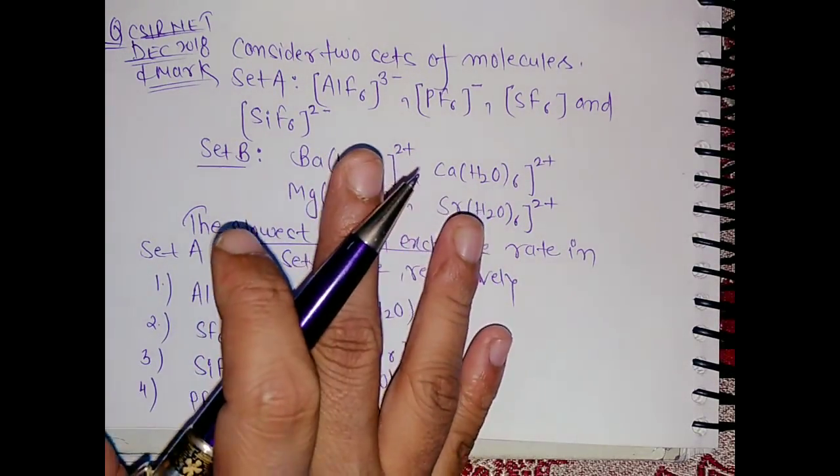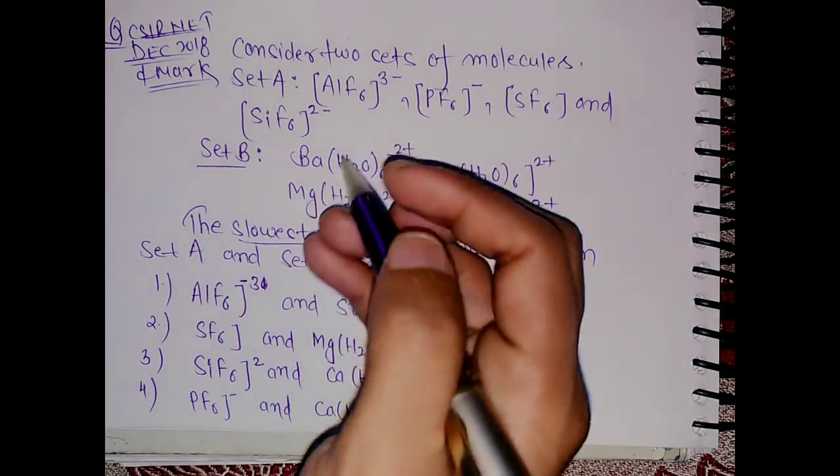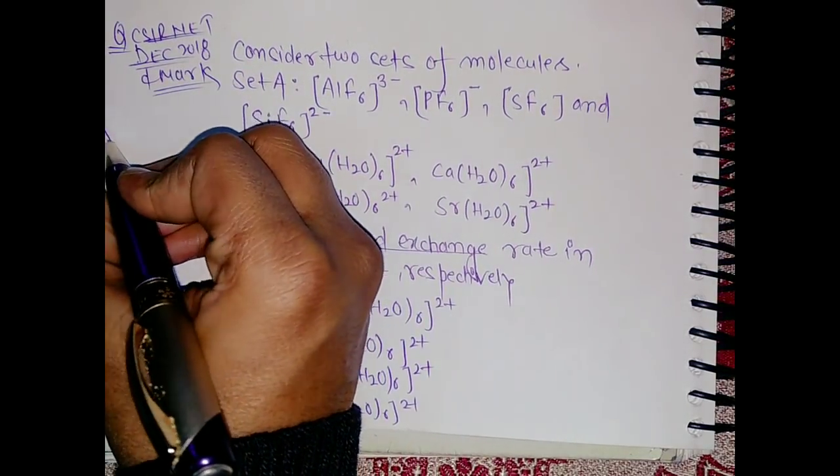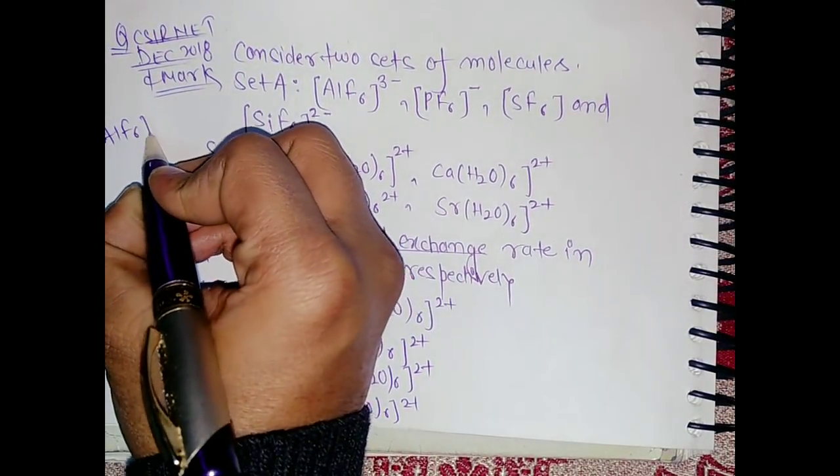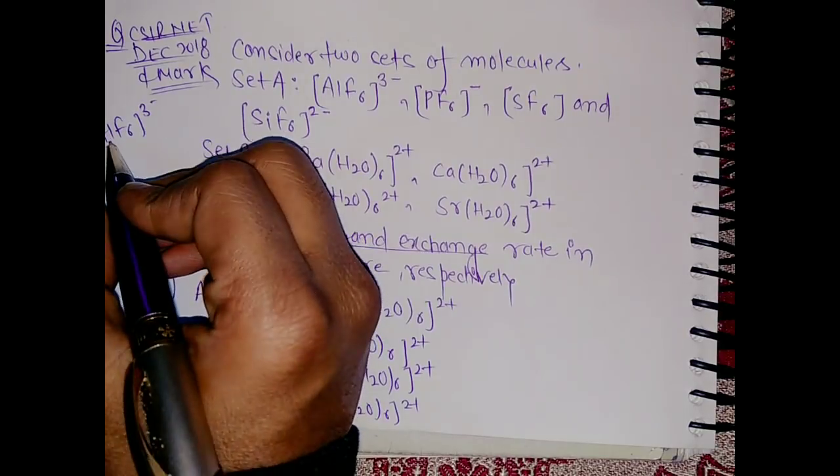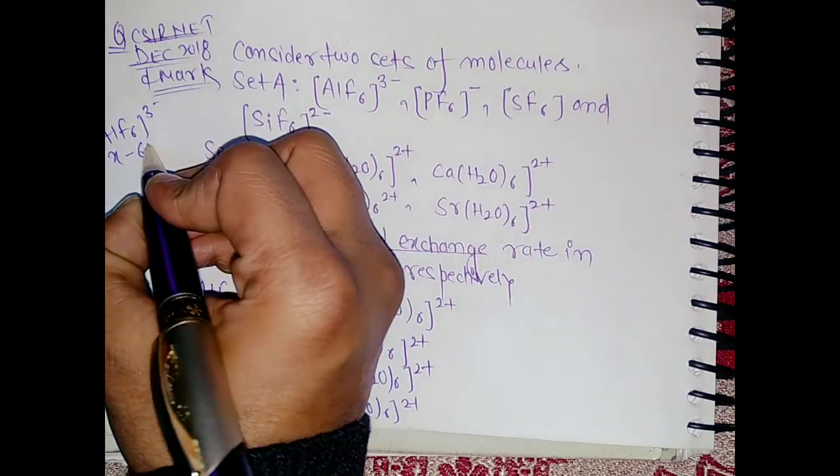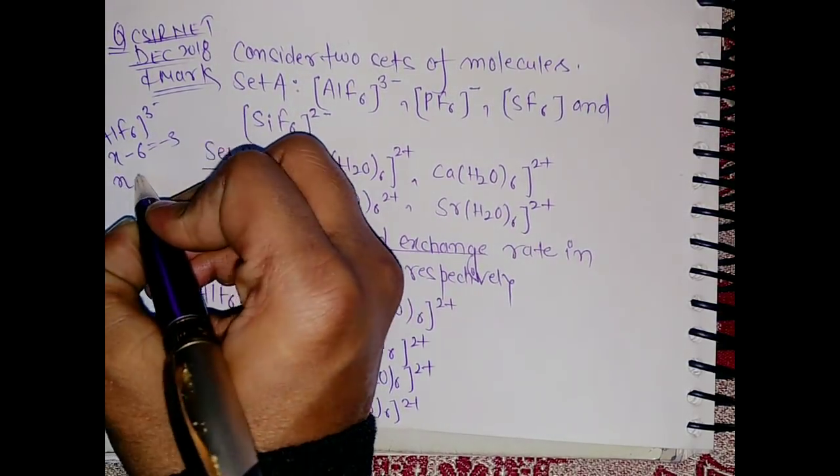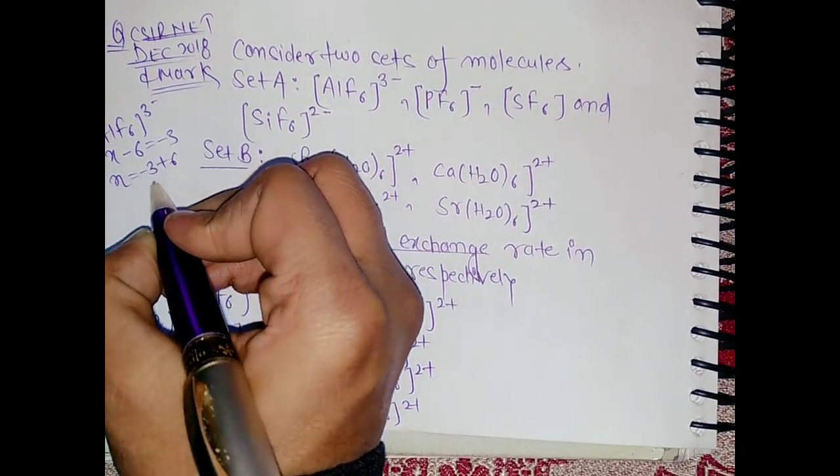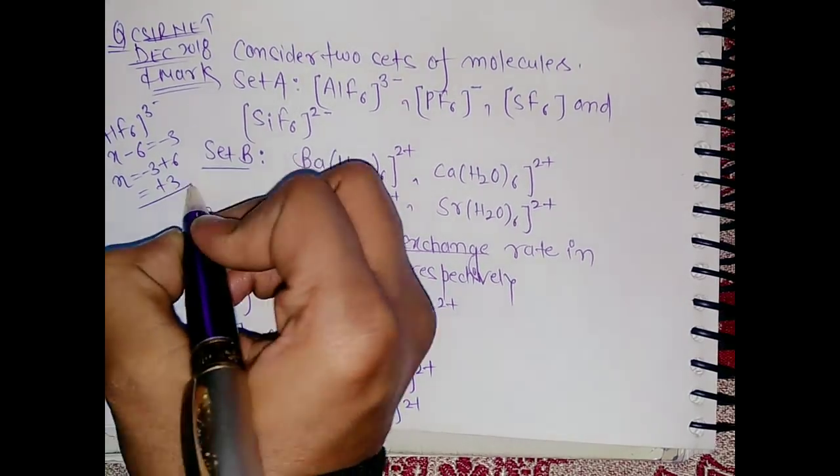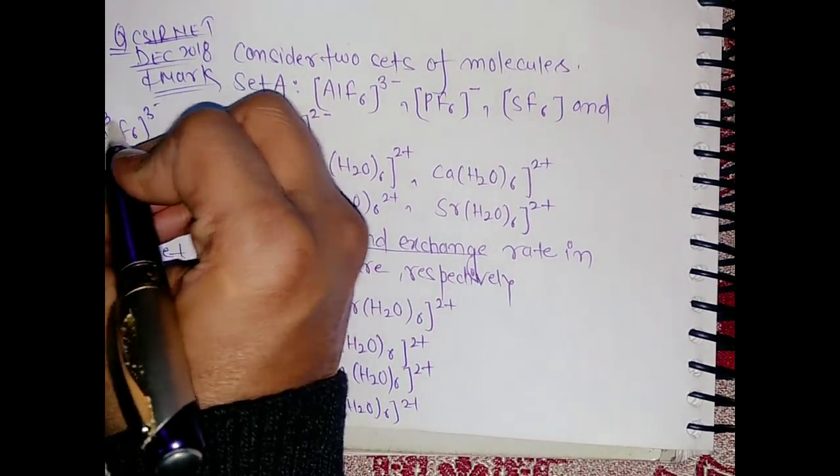If I have this AlF6^3- so the oxidation state of aluminium is how much? Fluorine is -1 so this will become -3+6 and this is +3, so we have +3 charge on the aluminium.